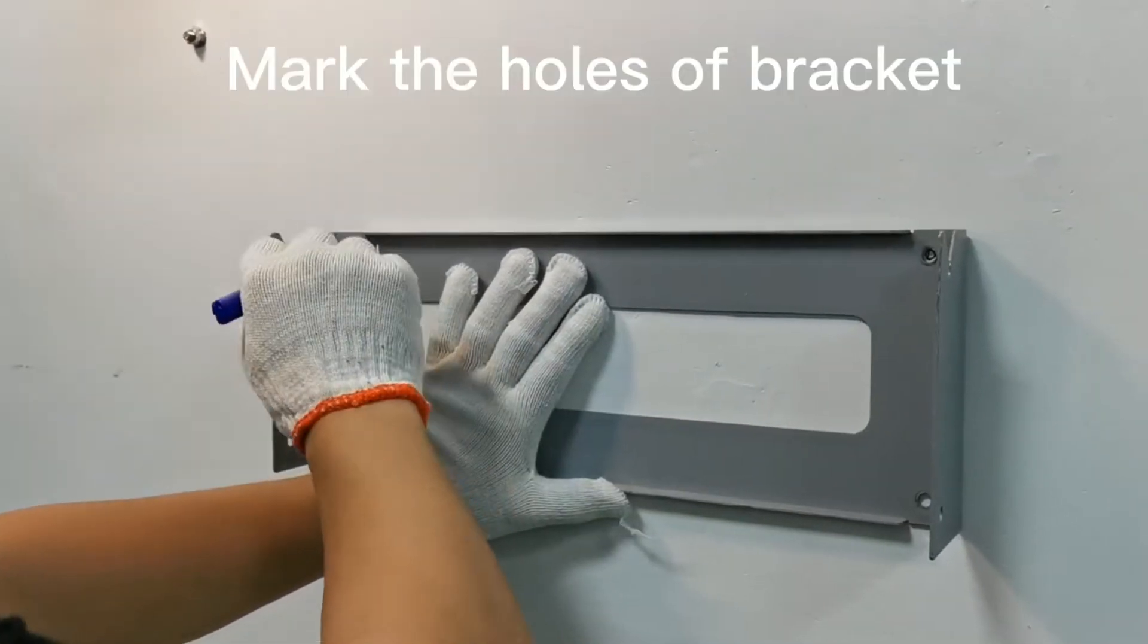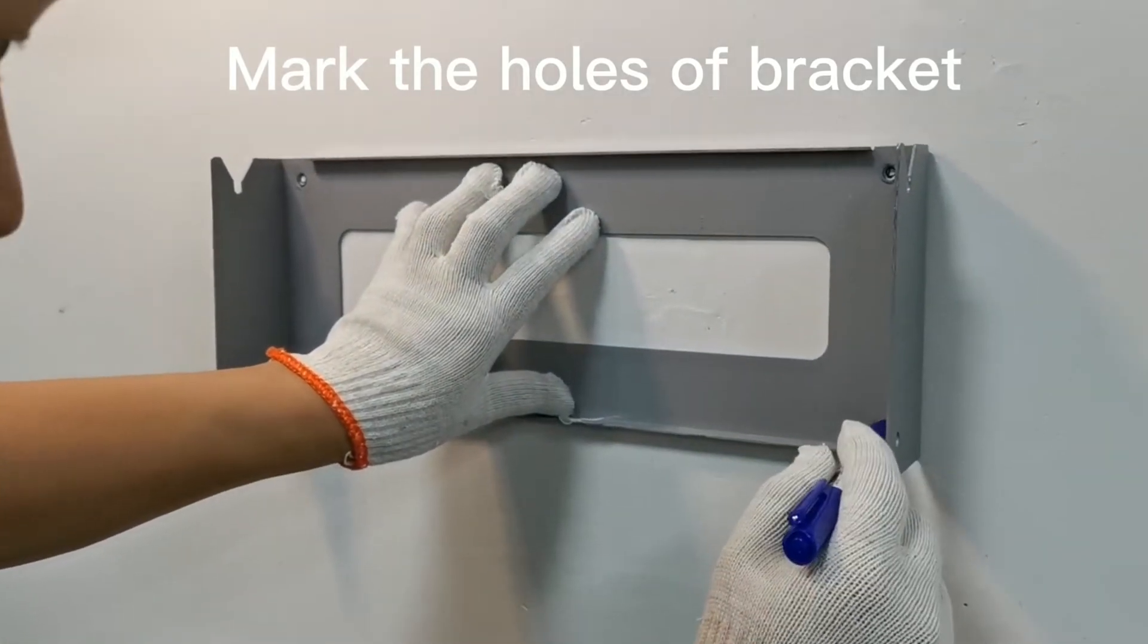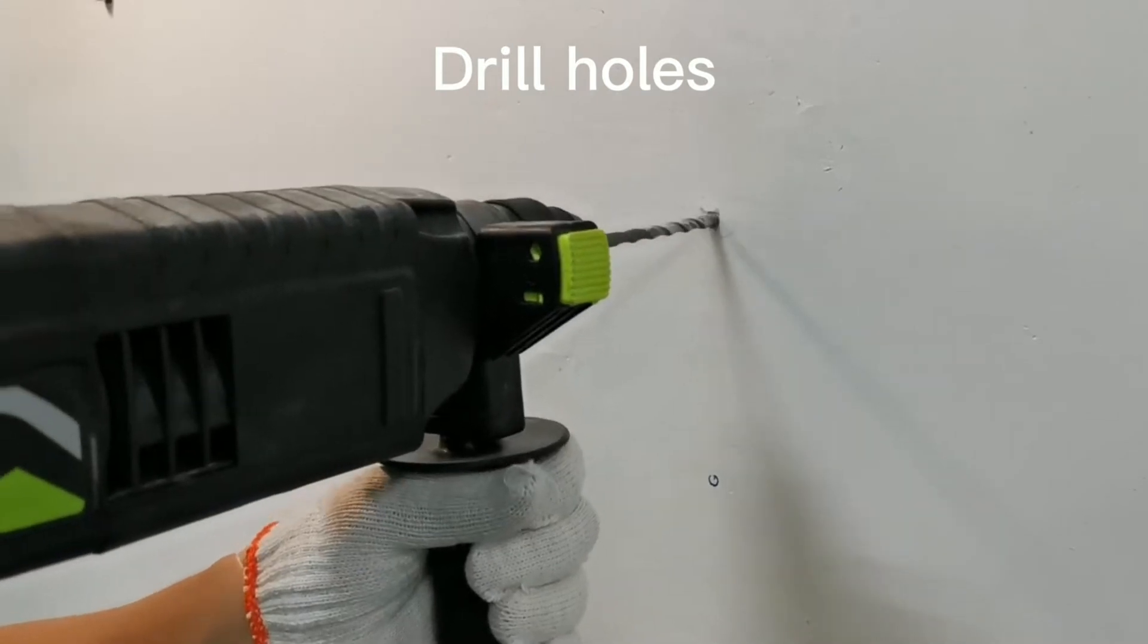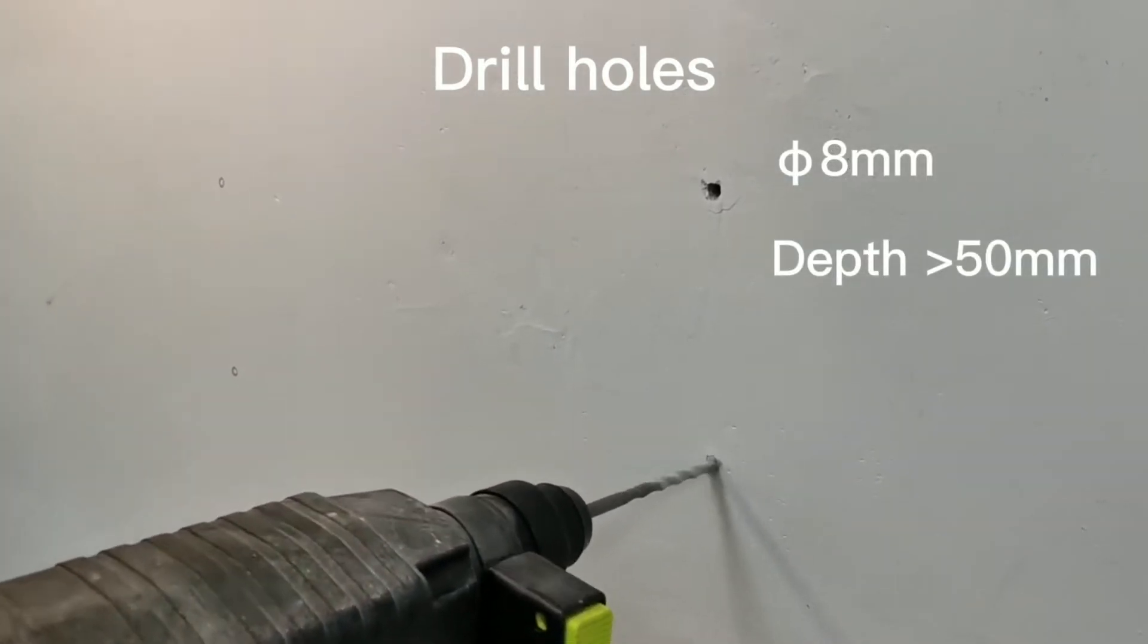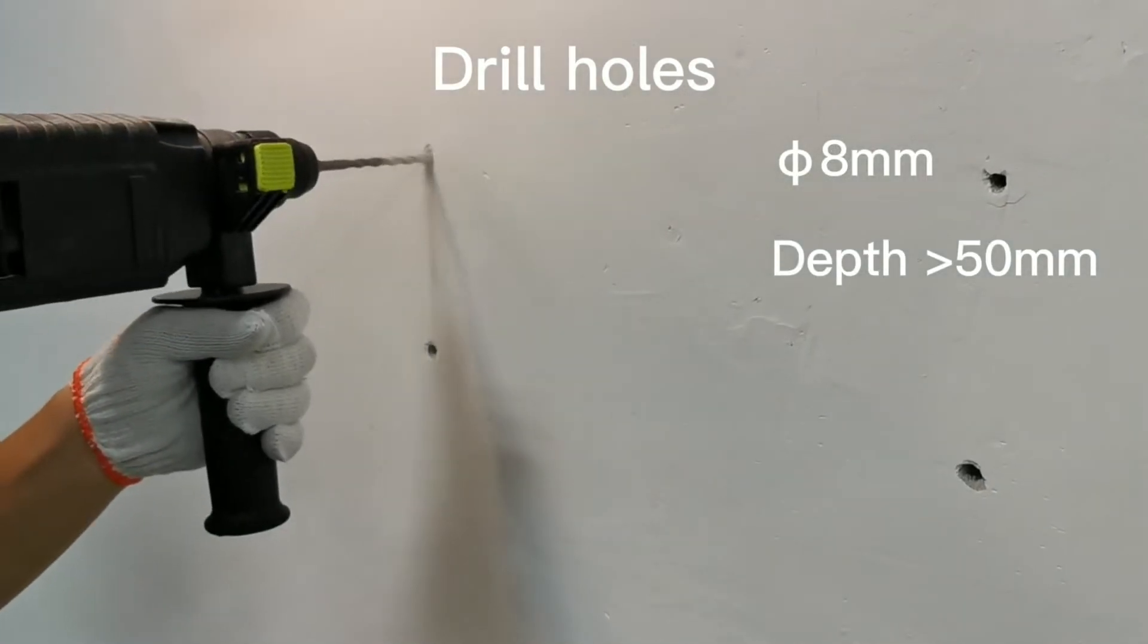Step 1: Use the wall mounting bracket as the template to mark the position of the 4 holes. Then drill 8mm holes, and make sure the depth of the holes is deeper than 50mm.